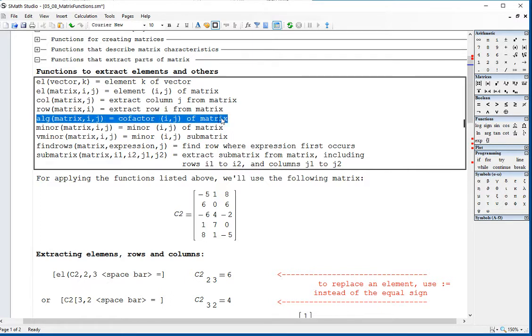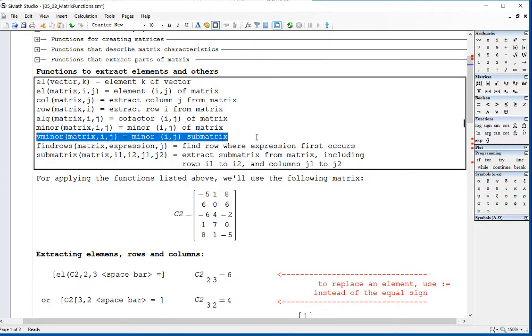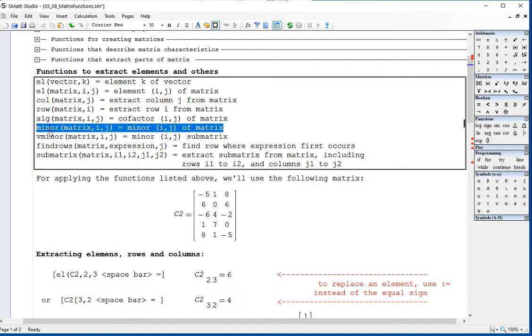Aug will extract what is called the cofactor. The cofactor and the minor are operations that are used in linear algebra for calculating determinants, for example. And you should also have this minor matrix i, j that will extract the sub-matrix rather than the minor, the determinant minor.